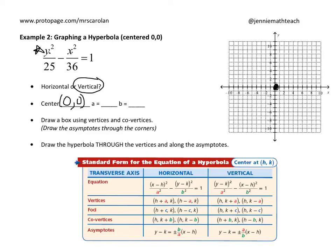Now we need a and b. a squared is always first — square root it and we get plus or minus 5. b squared is always second — that's 36, so square root gives plus or minus 6. We count those from the center: the 5 came from under the y, so we count up and down 5; the 6 came from under the x, so we count left and right 6. From the center: up 5, down 5, right 6, and left 6.